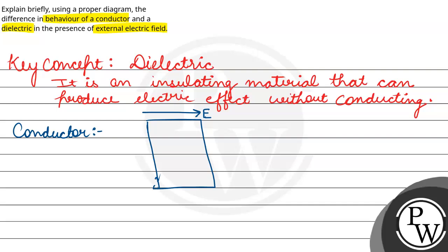Joh distribution hota hai charge ka, is side negative aur is side positive charges. Aur joh yaha pe electric field induced ho gi, aur joh induced electric field ho gi, woh is tarah se ho gi ki joh external electric field hai, usko cancel out karte hai. That means, conductor ke andar joh electric field ho gi, woh zero ho gi.